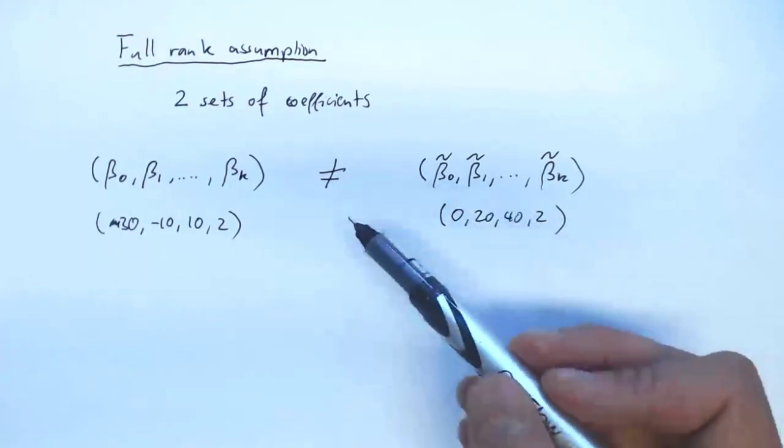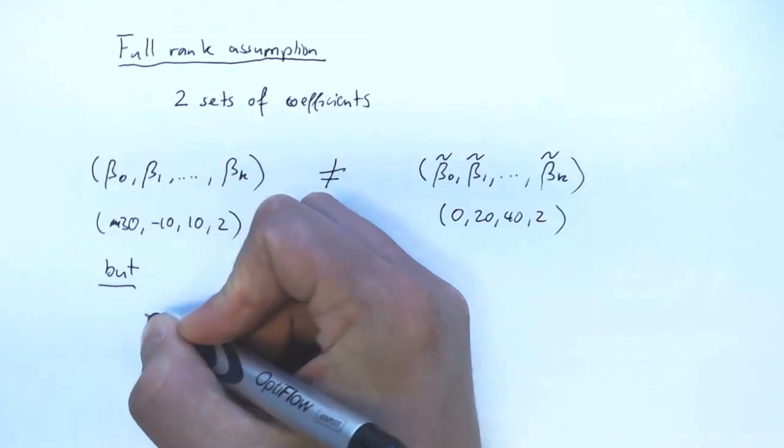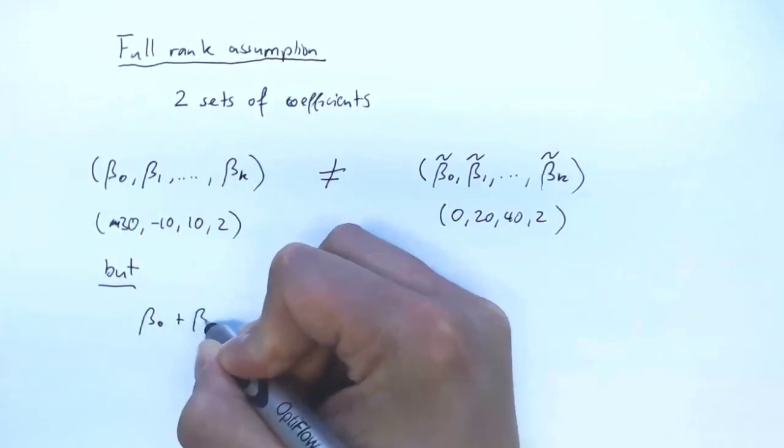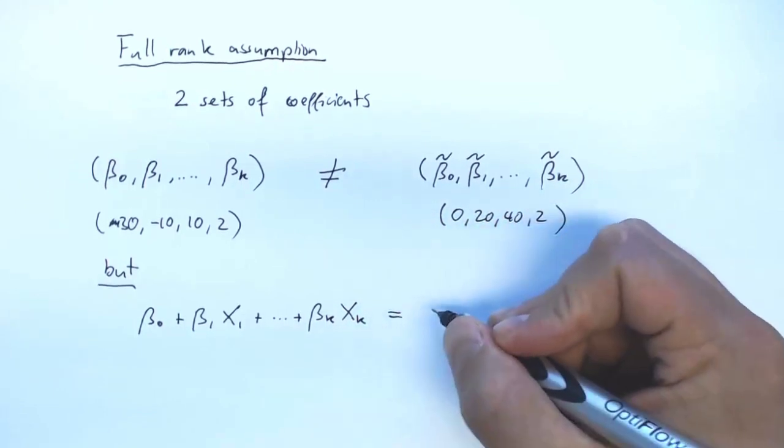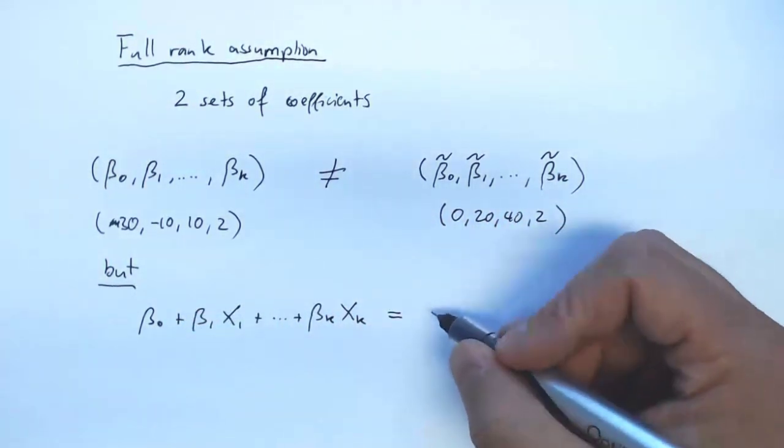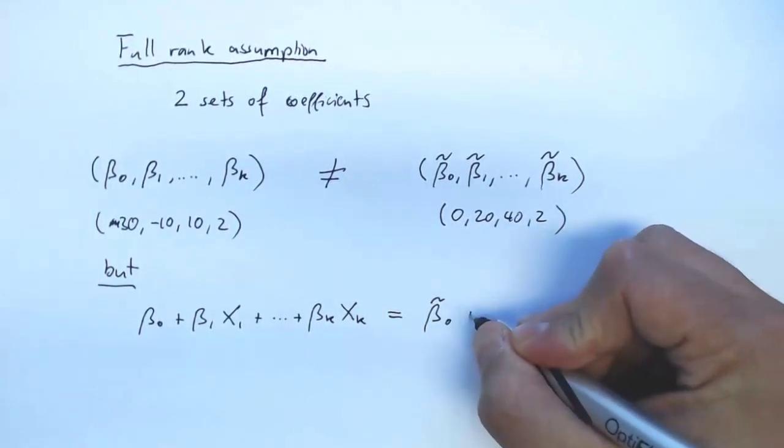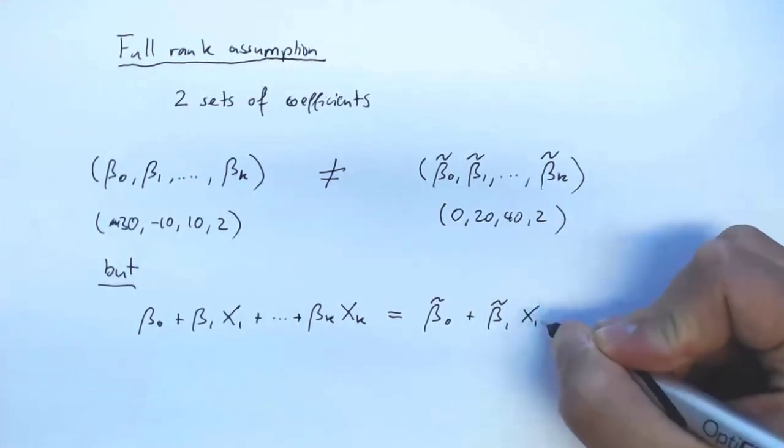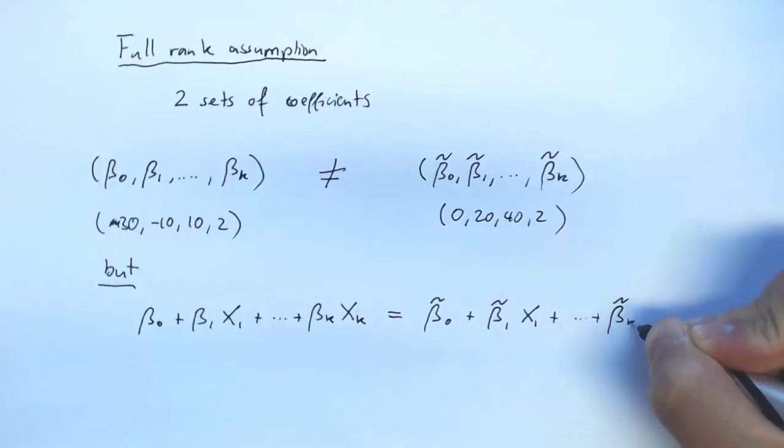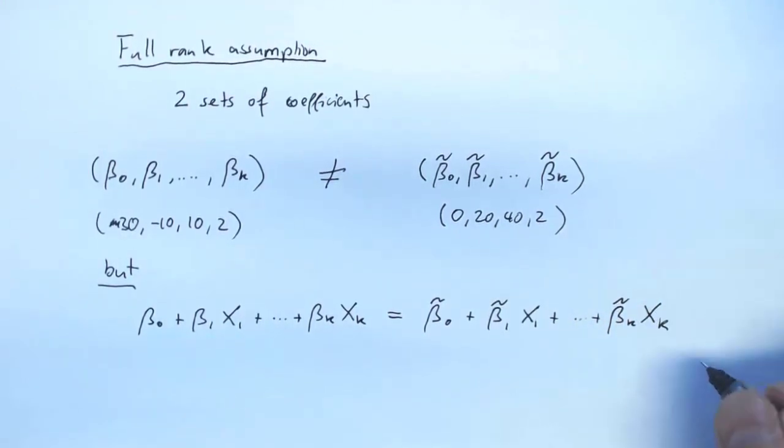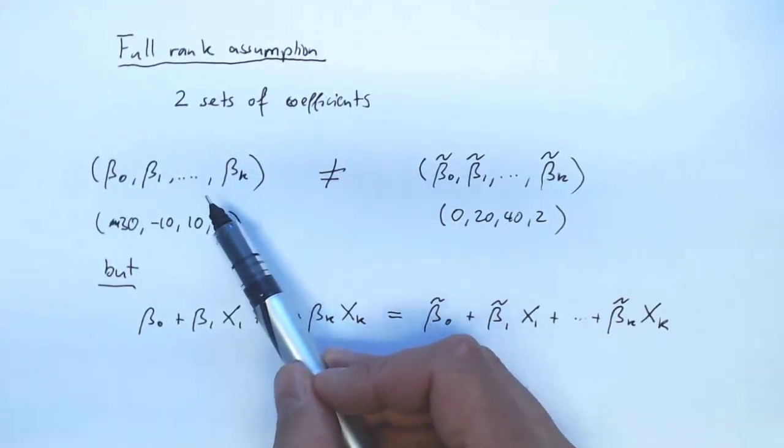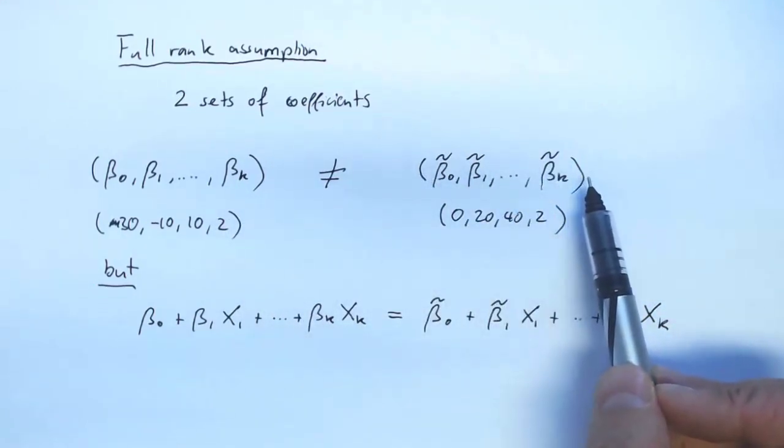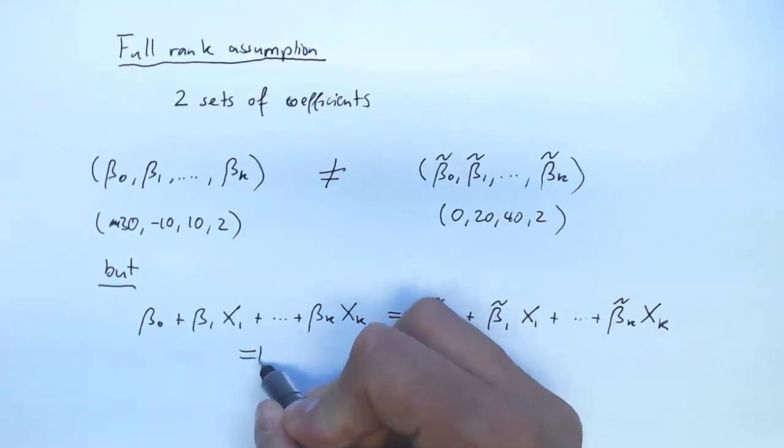I find two sets of coefficients that are different, but still if I write down the regression curve part of the linear regression model, it doesn't matter which set of coefficients I choose. I will get the same regression curve. So if I generate x's and use my linear regression model with these coefficients to compute outcomes, or I could use the linear regression model associated with these coefficients, it wouldn't matter—I would compute the same outcomes.